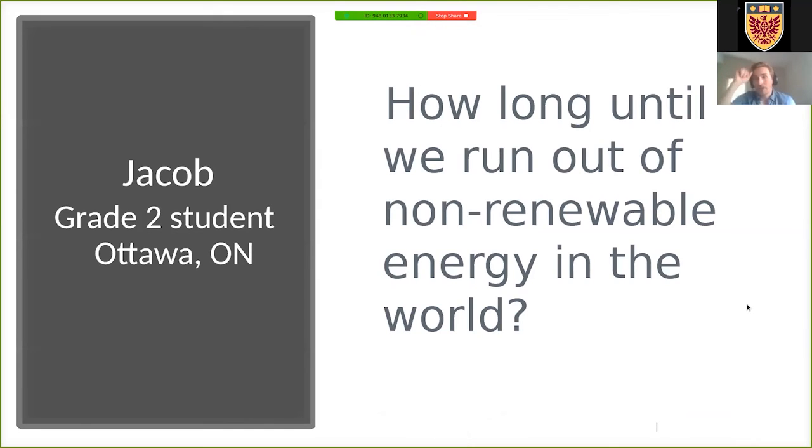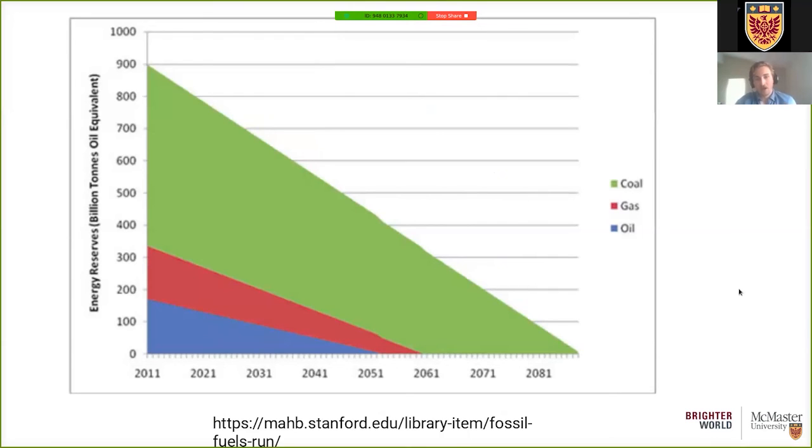So Jacob asks, how long until we run out of non-renewable energy in the world? So this is a tricky question to answer because it's hard to estimate how much non-renewable energy is already on the planet. There's a study from Stanford University. And the link is down here at the bottom. So if anyone wants to go and learn a bit more about the assumptions and methods of this particular study, they can follow that link and learn a bit more about it.